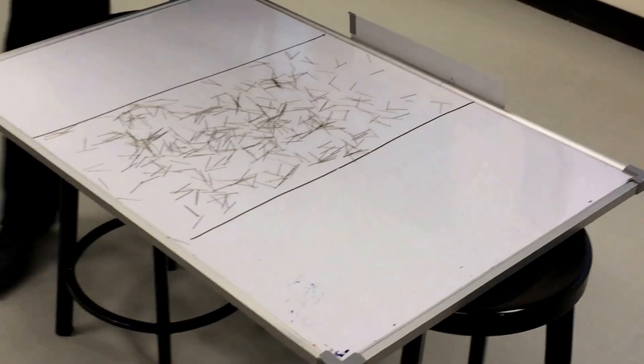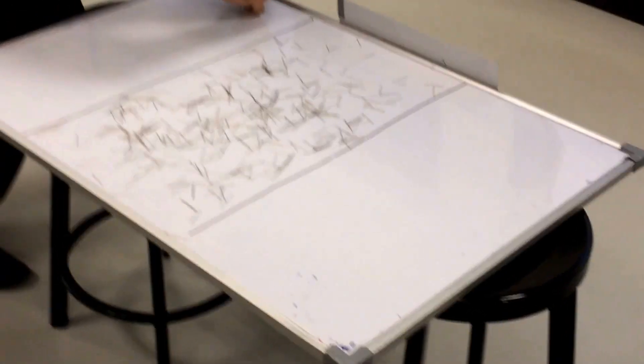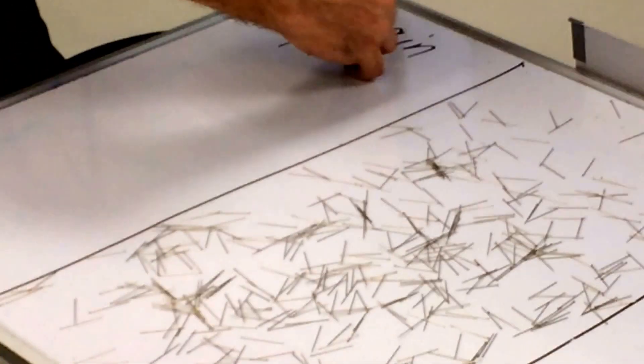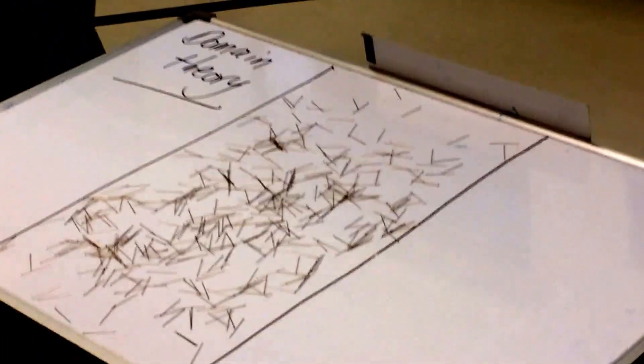Now, the theory goes that we've got a little bit. The theory is called Domain Theory. Each of the little pins represents a domain.